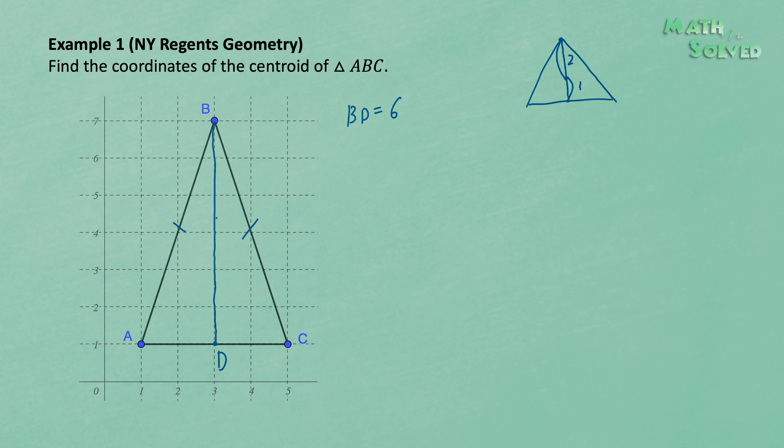So the centroid of triangle ABC, as we just mentioned, must be on BD. We can assume it's around here. We don't know for now, so we can just assume it's here, and the point is E.